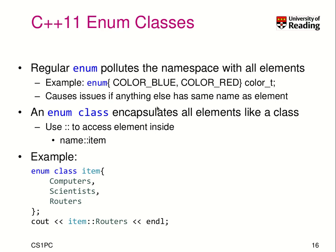Our next topic is C++11 enum class. We know that regular enums pollute the namespace with all elements. So in C, we create an enum color_t that has the values color_blue and color_red. We always had to prefix those colors like color_blue and color_red. The problem is that you can use each identifier just once in your program, which is why we had to use those prefixes.